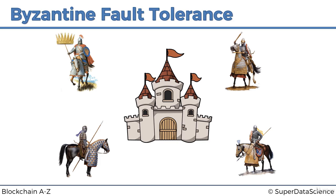Among these generals there is one main general — the commander of the army — and at the same time there's also a traitor. They don't know who out of these generals is a traitor, and the traitor is there to put roadblocks in their way so they don't come to a consensus. The question is: how do they come up with an algorithm, a consensus protocol, that will help them come to a decision?